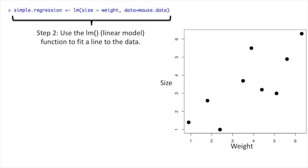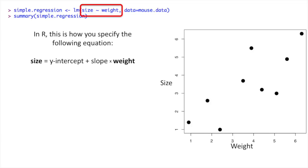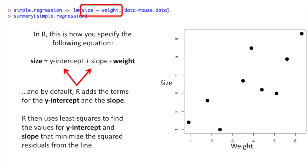Step 2, use the LM function, where LM stands for linear model, to fit a line to the data. In R, this is how you specify the following equation. We specify size is predicted by weight by using the tilde character between size and weight. And by default, R adds the terms for the y-intercept and the slope. R then uses least squares to find the values for the y-intercept and the slope that minimize the squared residuals from the line.